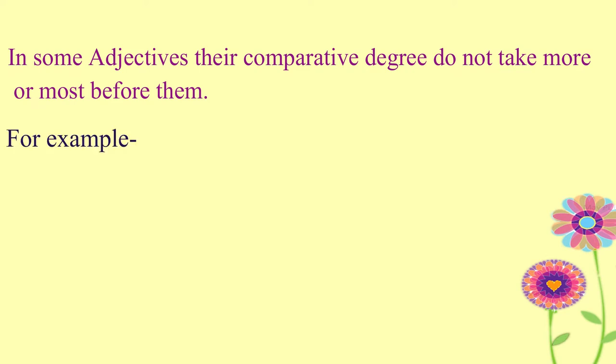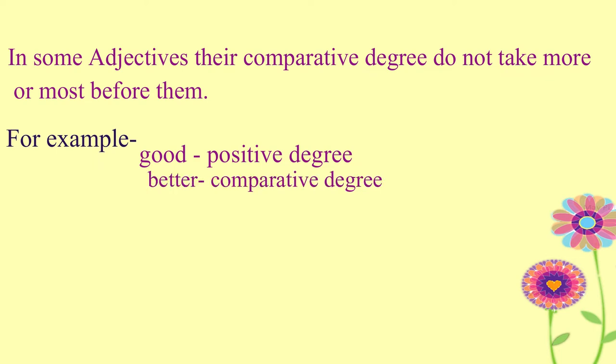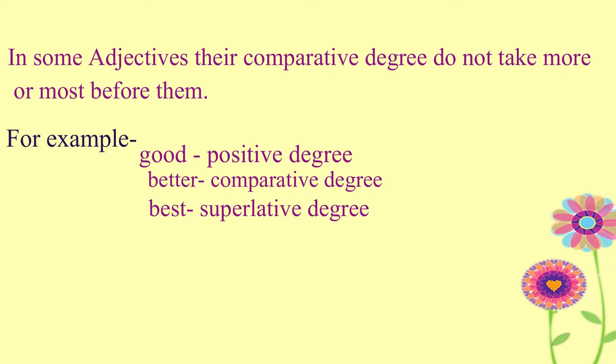For example, good in positive degree is said better in comparative degree and best in superlative degree. We haven't used ER as a suffix with good — we don't say gooder, we say better, and in superlative degree we call it best. This is what we call irregular adjectives.